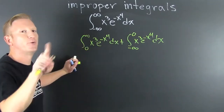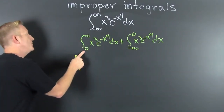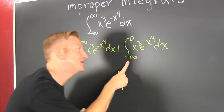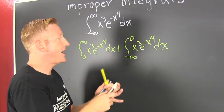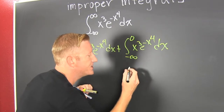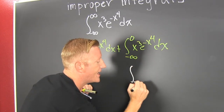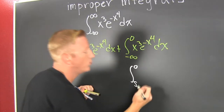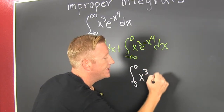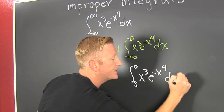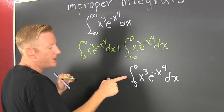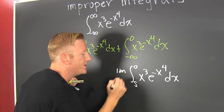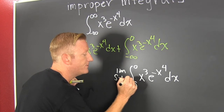Those two are equivalent. Now, we're going to break this up into a one-sided limit. Let's go ahead and do that. We're going to say this is from s to zero of x to the third times e to the minus x to the fourth dx. We need to put a limit in there so that it's equivalent to the original, so it's the limit as s goes to minus infinity.